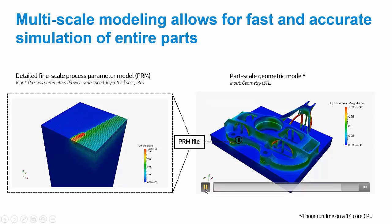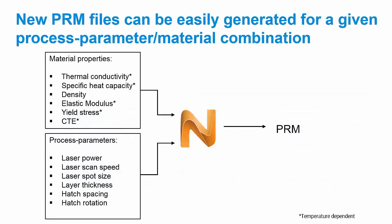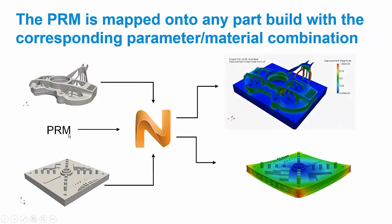To break this down further: we take our material properties and input them into Netfab Simulation along with our machine process parameters. The output is a process parameter file that is unique to this material and process parameter combination. Once we have that PRM file — say for the EOS machine's performance settings on TI-64 — any time I go to build a geometry on the EOS machine using titanium at the performance setting, I can use this PRM file, input it into Netfab Simulation along with the CAD file, and the output will be the distortion of the part I'm going to build.